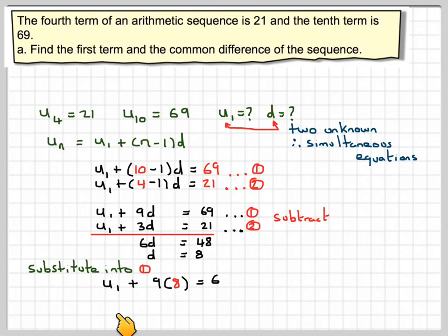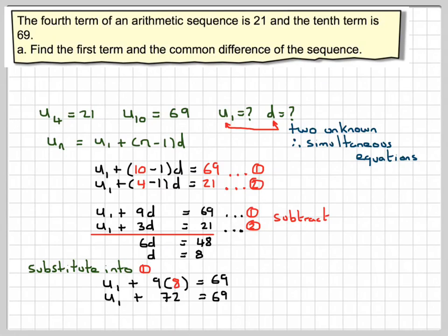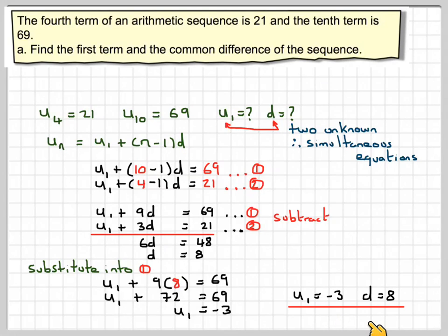If we substitute back into one of the equations, we get U1 plus 9 times 8 equals 69. So U1 plus 72 equals 69. Therefore U1 is equal to minus 3. And D is equal to 8.